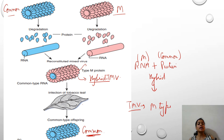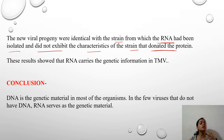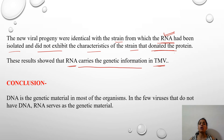In the reciprocal case, the new TMV progeny would have been of the M type because the genetic material — the RNA — is of the M type, which codes for the protein of the M type, making all new progeny of M type. The new viral progeny will be identical with the strain from which the RNA was isolated, and will not exhibit the characteristic of the strain which donated the protein — because proteins are not the genetic material; RNA is the genetic material carried forward from one generation to the next.